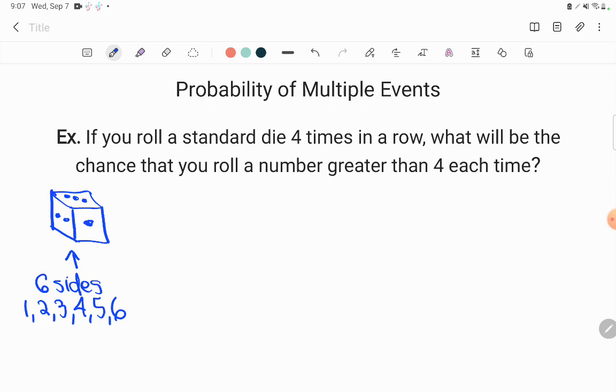So what you're going to notice here is that I'm doing an action more than once. I'm not just rolling my standard die one time, I'm rolling a standard die four times in a row. Super important to understand that when you have multiple actions happening or multiple choices to make, we are going to multiply. Multiple actions happening or multiple choices to make, we are going to multiply.